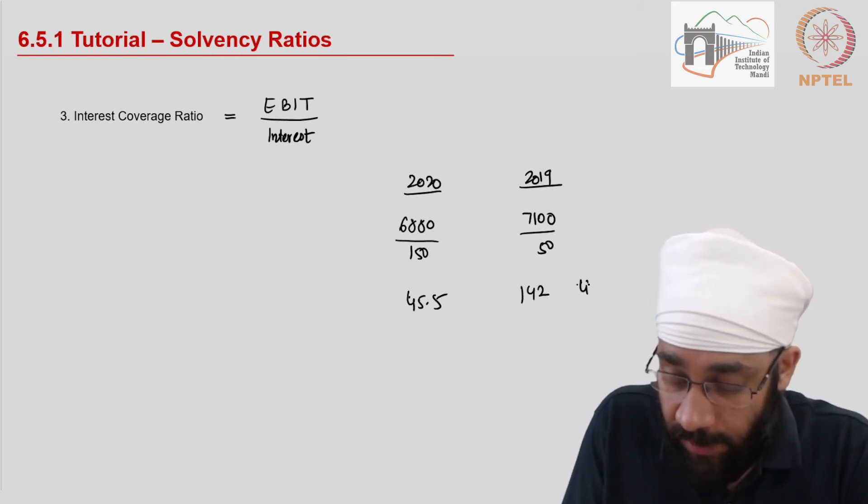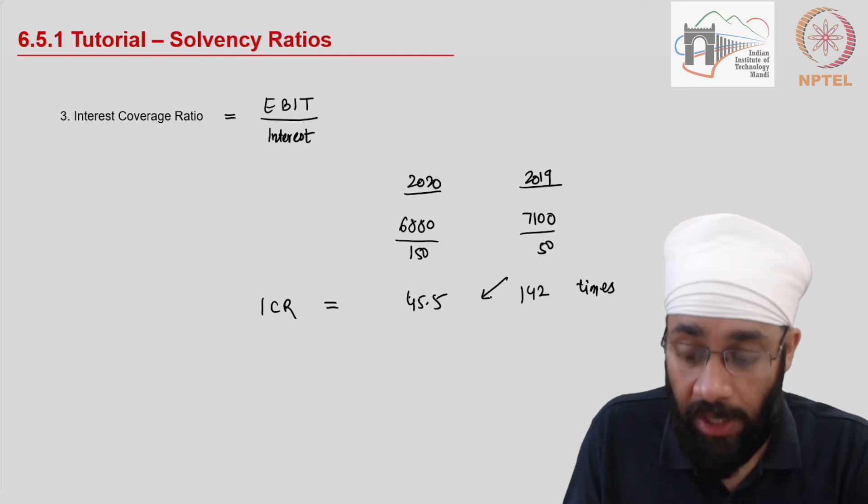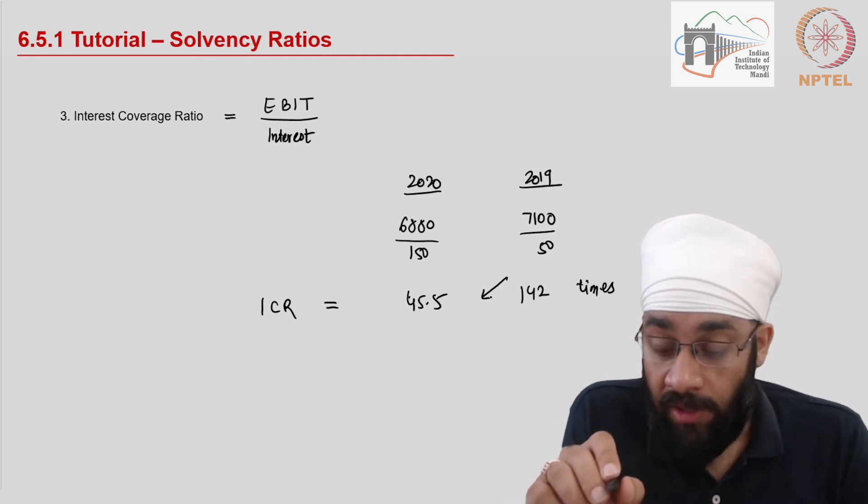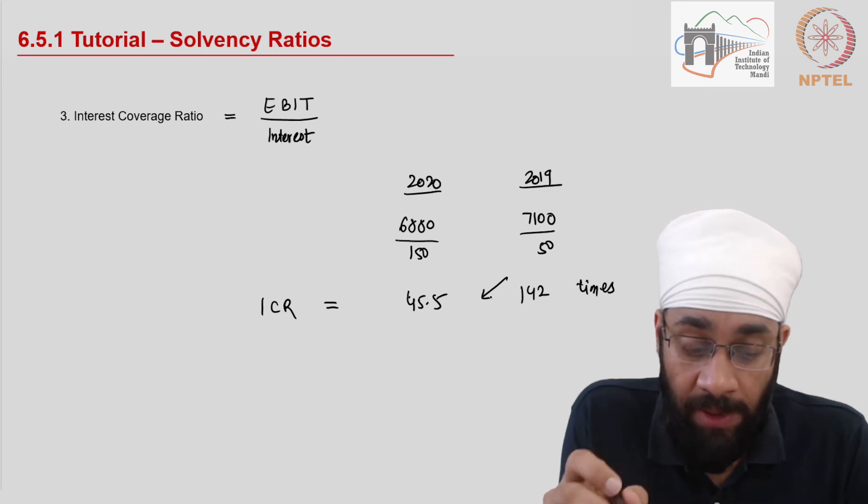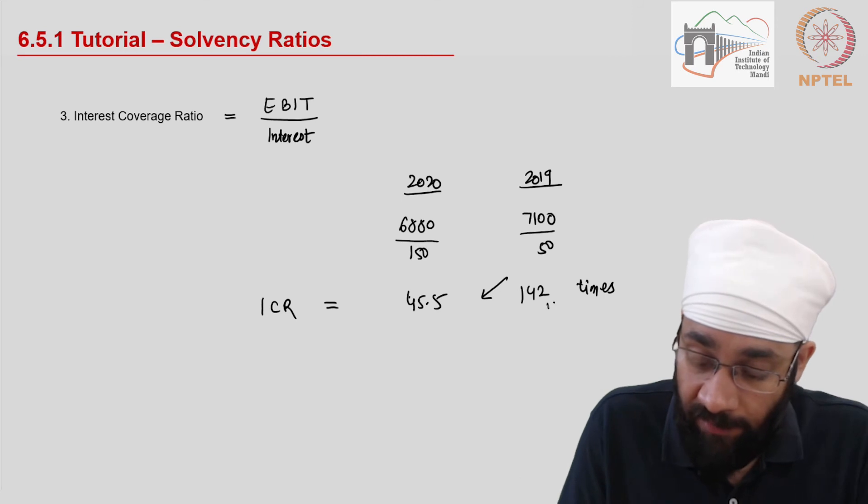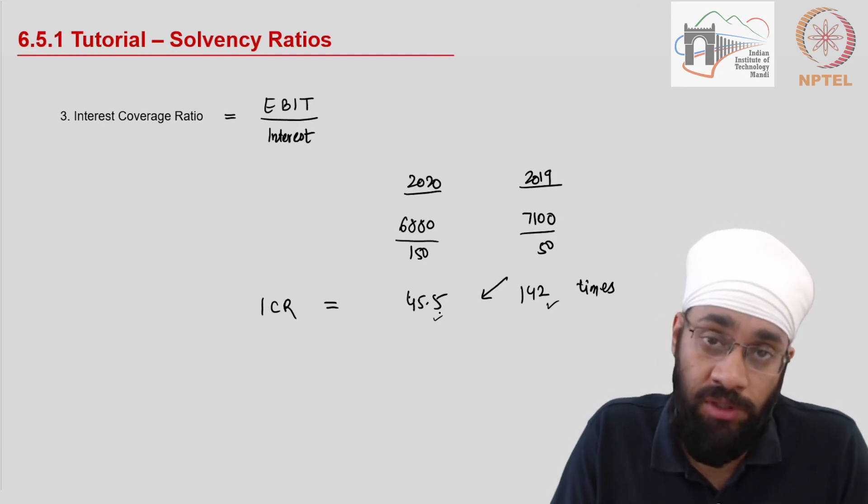So 6880 divided by 150 gives you 45.5 interest coverage ratio, and 7100 divided by 50 gives you 142. So the unit is times. The interest coverage ratio is going down from 142 to 45.5.